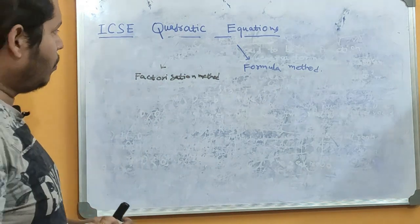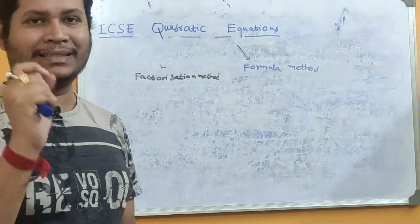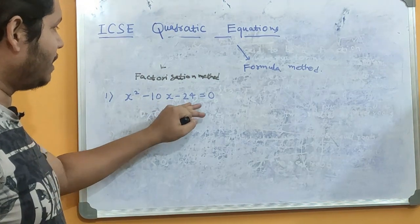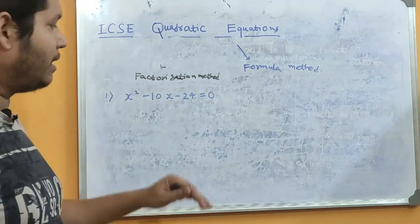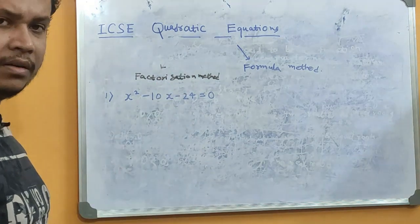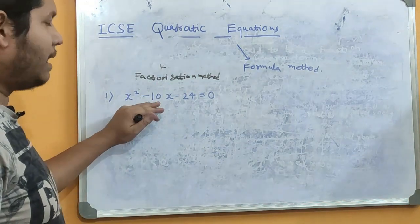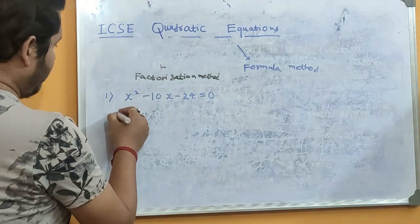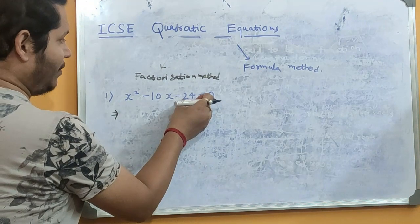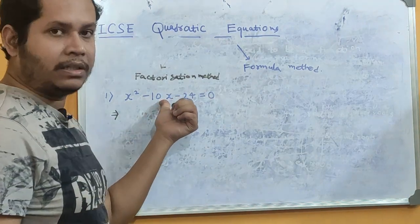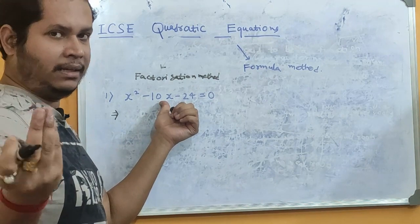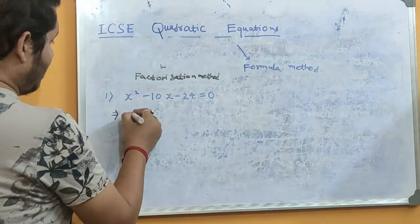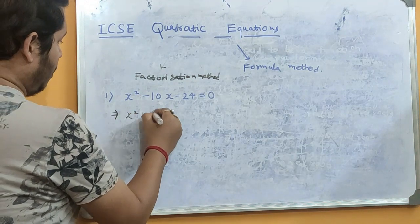I'm going to show you both methods with an example. Let's see the factorization method with this equation: x² − 10x − 24 = 0. We learned factorization in Class 9, so we are going to apply middle-term factorization. The product here is 24, and we can break the middle term as 4 and 6 because their product is 24 and their sum gives us 10.